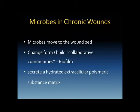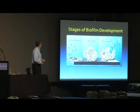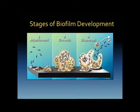Bacteria form these collaborative communities, or biofilms, and they develop this matrix — this EPS — around themselves that gives them their protective barrier. When they land, they land in planktonic form, and they immediately form their communities, build their matrix, and then begin to send out new fragments to start the process all over again.